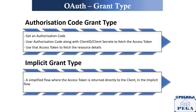The Implicit grant type is used when you have a simplified flow where the access token is returned directly to the client. You won't have the additional step of getting the authorization code and then passing the client ID and secret to get the access token — instead, once Google validates you, they send the access token directly back to the client. Applications like React generally go with this approach because they don't have the facility to call back again or store a server-side secret. So this kind of application uses this grant type.